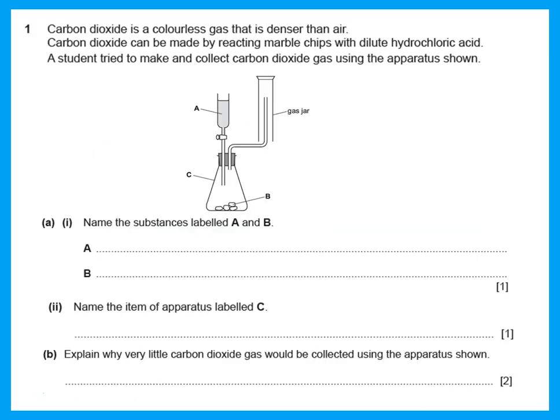The first question says carbon dioxide is a colorless gas that is denser than air. Carbon dioxide can be made by reacting marble chips with dilute hydrochloric acid. A student tried to make and collect carbon dioxide gas using the apparatus shown.